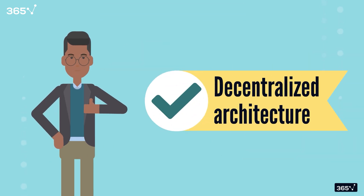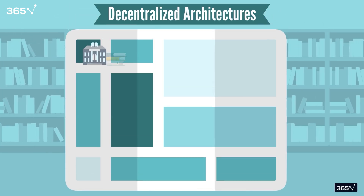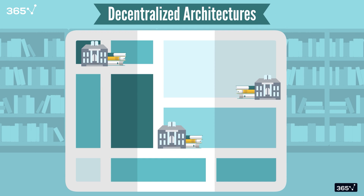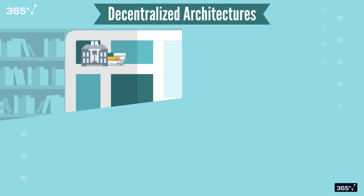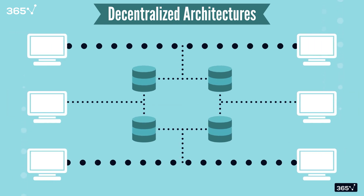This is where decentralized architectures come in. Think of multiple smaller libraries, each serving a small neighborhood in the city. These libraries manage their own collections and serve local needs, so there is no longer the need to go to one central library for all the information. In the world of data, decentralized architectures are designed to spread data across various systems or geographical locations — systems where individual teams or departments within a company are managing their own data sets.